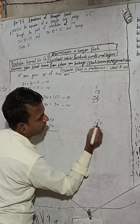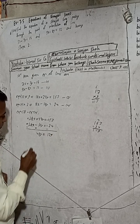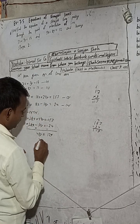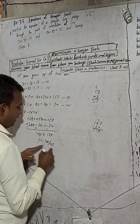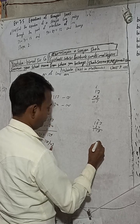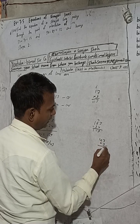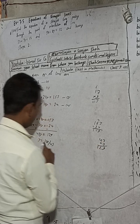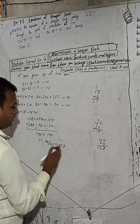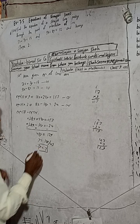Dividing 129 by 43: 43 goes 3 times into 129 since 43 × 3 = 129. Therefore y = 3.